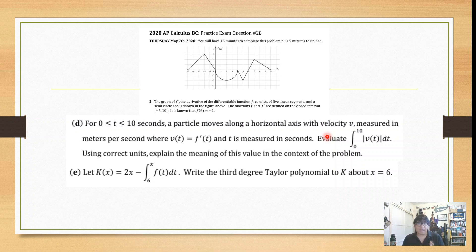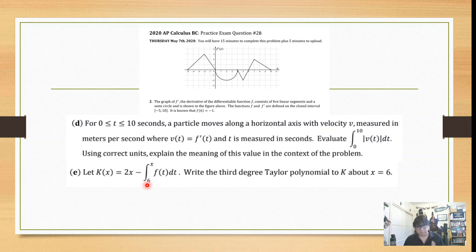Part E: let k = 2x minus the integral from 6 to x of f(t) dt. Write a third-degree Taylor polynomial for k about x = 6. You'll need a little bit of math knowledge to get k prime, k double prime, and k triple prime, because they made it a little more difficult. But not too much difficult.